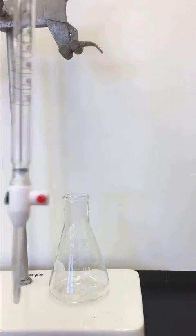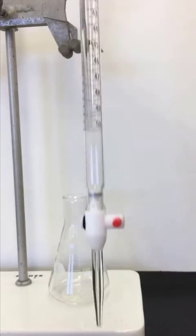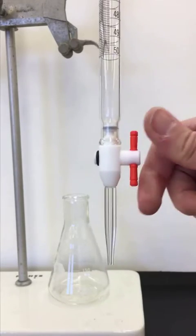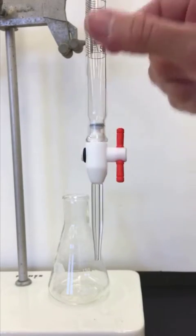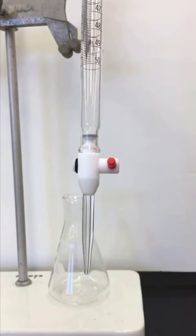The burette has a stopcock on the bottom here and we control the stopcock by turning it. When it's parallel with the burette it's wide open. When it's perpendicular it is closed.